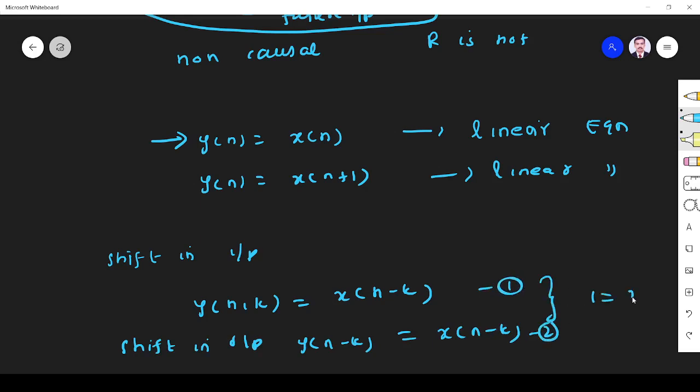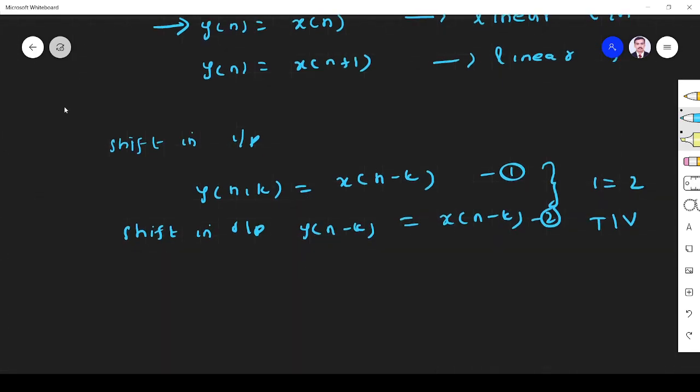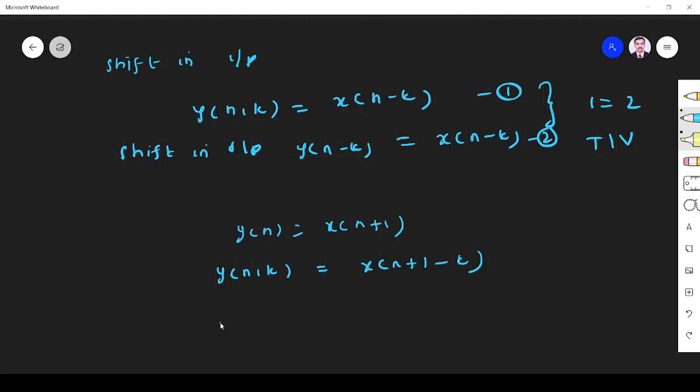1 equals 2, so time invariant. This part is time invariant. We have to check for the second part: y(n) equals x(n+1). Same, shift in input: y(n-k), I shift input as x(n+1-k). Then I shift output: y(n-k), wherever we have n, that should be increased to n-k. This is 1, this is 2. 1 equals 2, so time invariant.